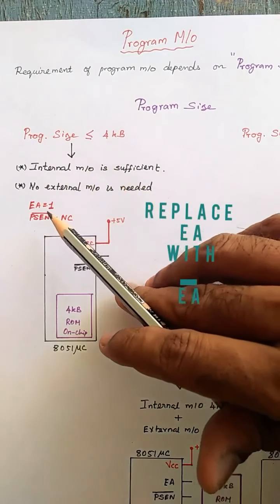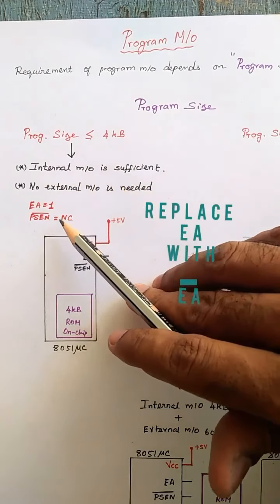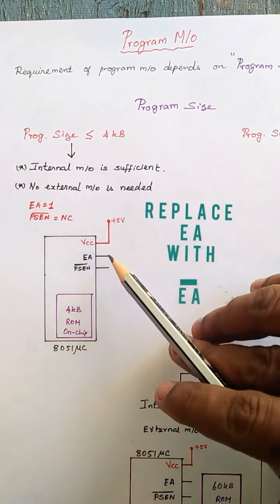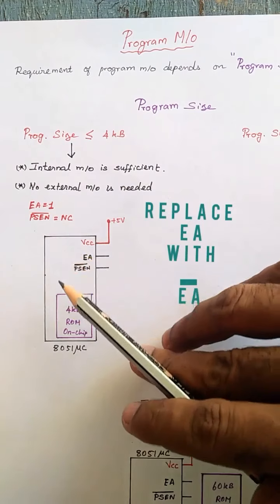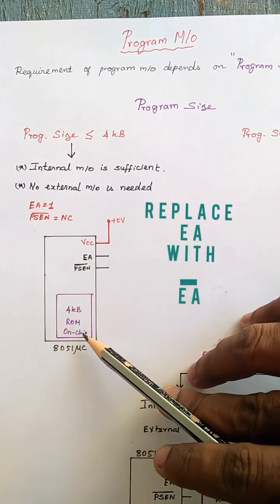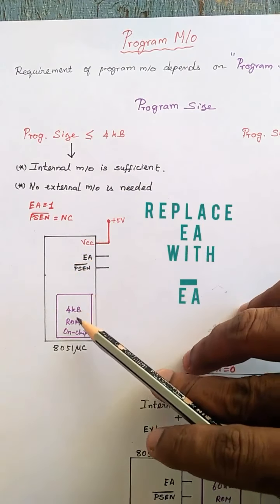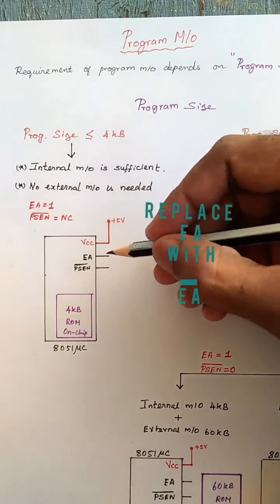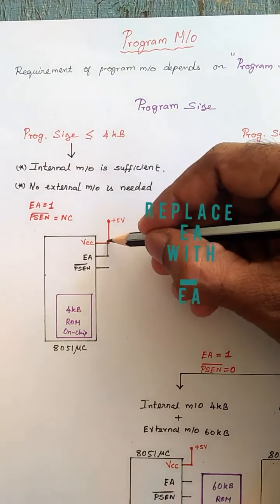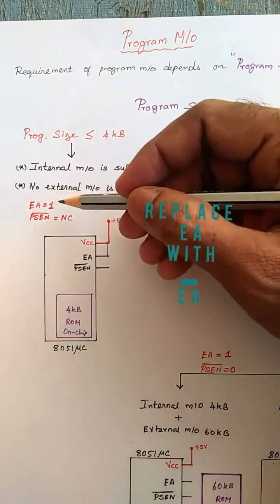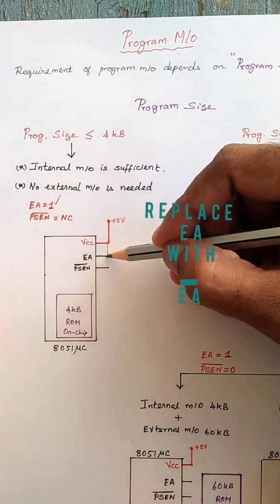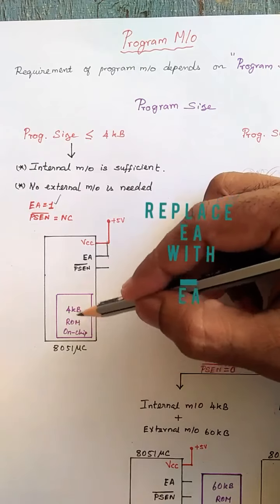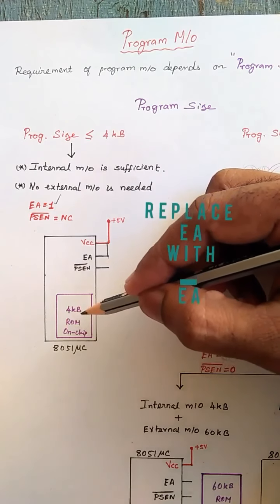When the program size is within 4KB and internal memory is sufficient, we make the EA pin equal to 1 (connected to VCC) and leave PSEN bar unconnected. This causes the 8051 to refer to memory locations from the internal program memory.